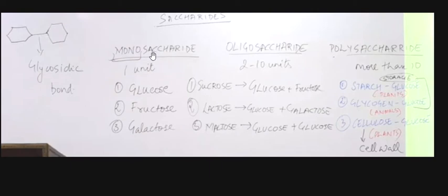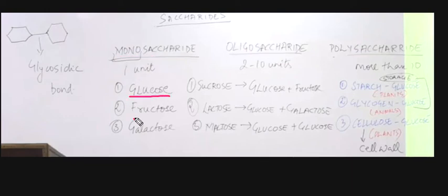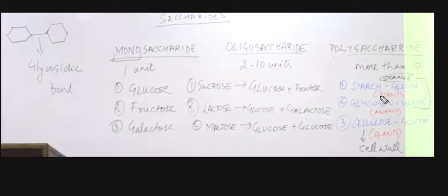Oligosaccharides are made with monosaccharides and they are joined by glycosidic bonds — we must remember they are joined by glycosidic bonds. So monosaccharides include glucose, fructose, and galactose. Oligosaccharides include sucrose — made of glucose and fructose — lactose from glucose and galactose, and maltose from glucose and glucose.